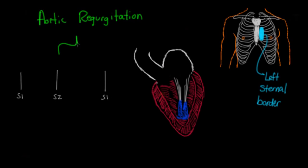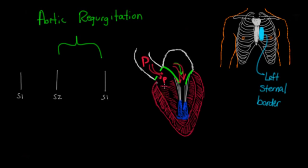Diastolic murmurs occur between S2 and S1. S2 is caused by the closing of the aortic valve, after which the mitral valve opens and the heart is in diastole, filling with blood. In aortic regurgitation, there's a closing problem with the aortic valve. Because pressure is greater in the aorta than the ventricle right at S2, blood comes back through. Since the ventricle is also filling from the atrium, ventricular pressure gradually rises, causing the most intense part of the murmur early on, which then diminishes.